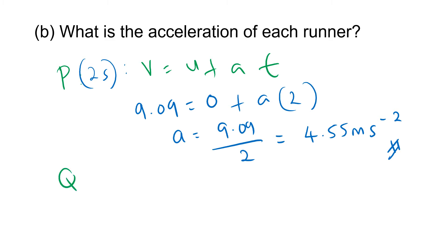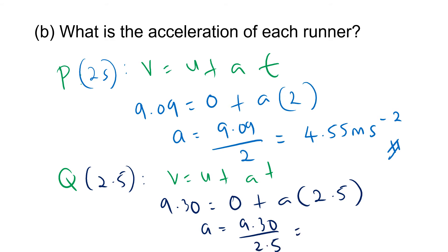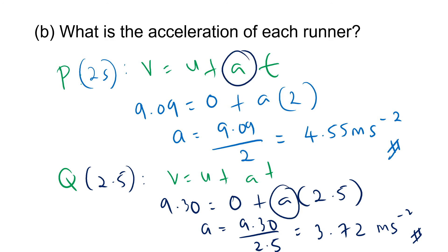For runner Q, we also use v = u + at. The acceleration for Q happens over 2.5 seconds, with v = 9.30 ms⁻¹ and u = 0. So a = 9.30 ÷ 2.5 = 3.72 ms⁻². Remember, acceleration only occurs during that initial phase — after that they maintain uniform velocity, so acceleration is zero.